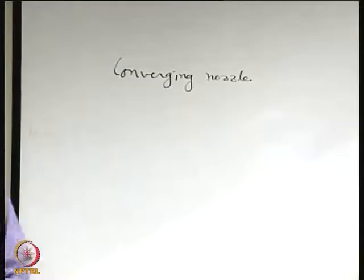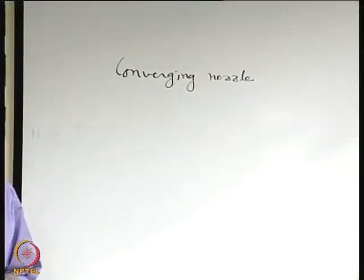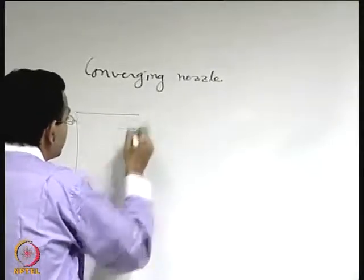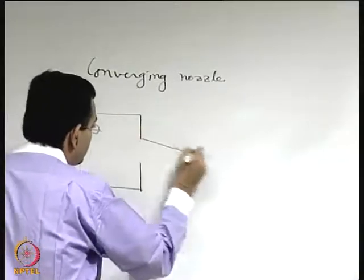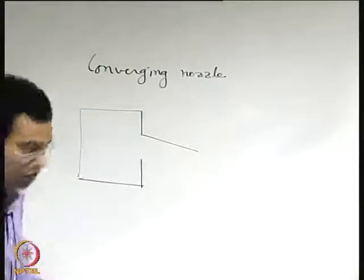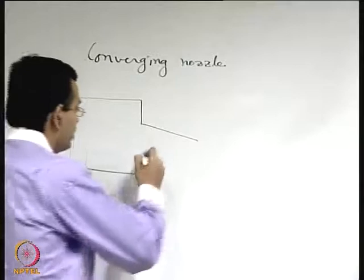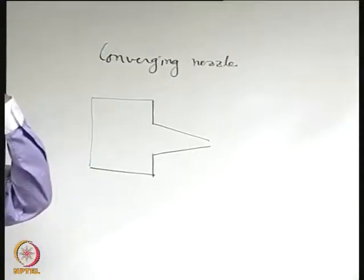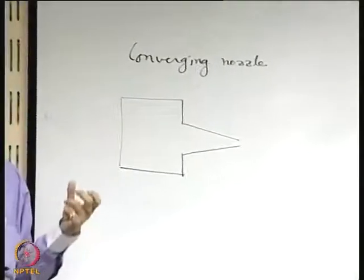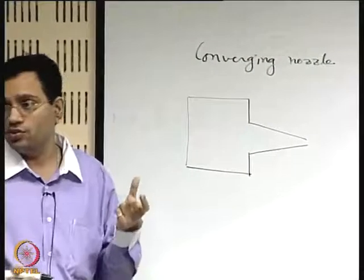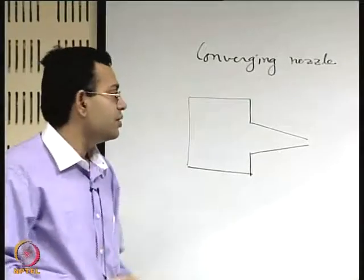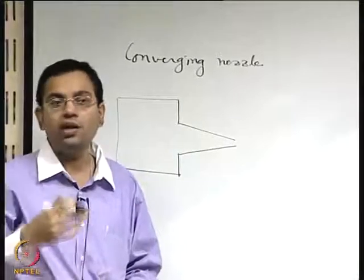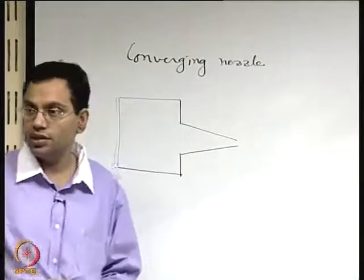One of the important objectives of a nozzle is to accelerate the flow. To do that, let us say you have a tank and you connect a converging nozzle with it. We have seen earlier that the nozzle shape need not always be convergent — one could have accelerating flow with a diverging section also. This is a non-intuitive manifestation of compressible flow, because density variation is very important: it is not just A times V constant, but rho times A times V is constant, and rho variation matters.